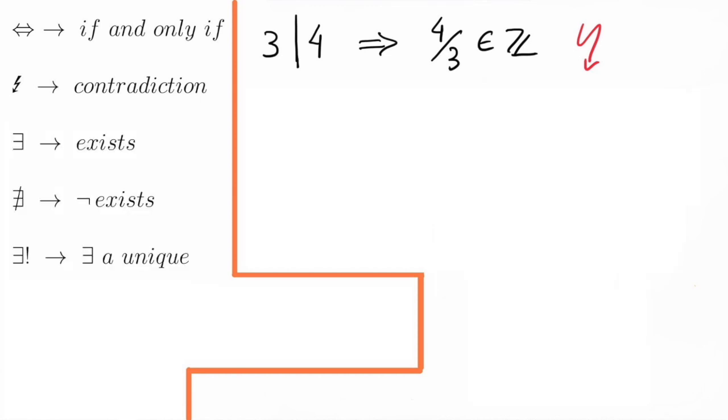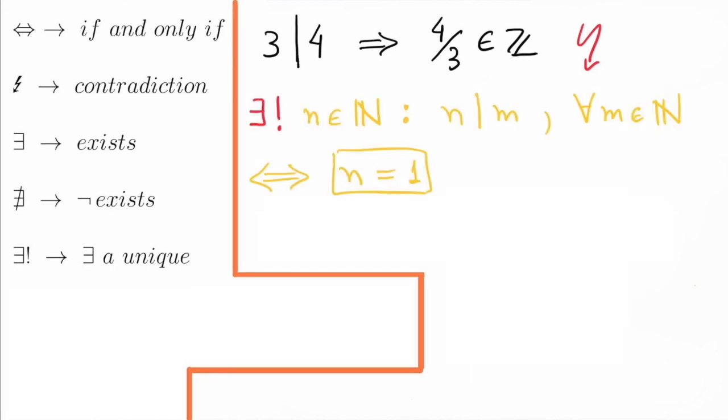The following three symbols represent exist, does not exist, and exist a unique, respectively. Let's see the last one in action. There exists a unique natural number N such that N divides M for all natural numbers M, if and only if N equals 1. In fact, the only positive integer that divides all other integers is 1.